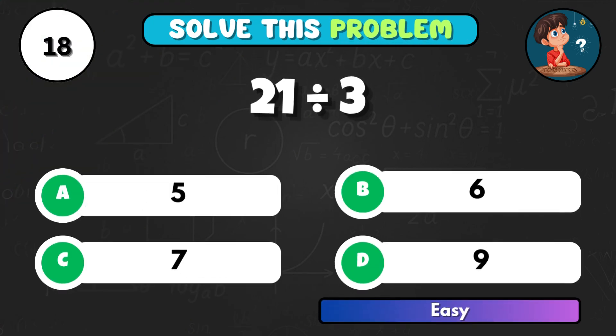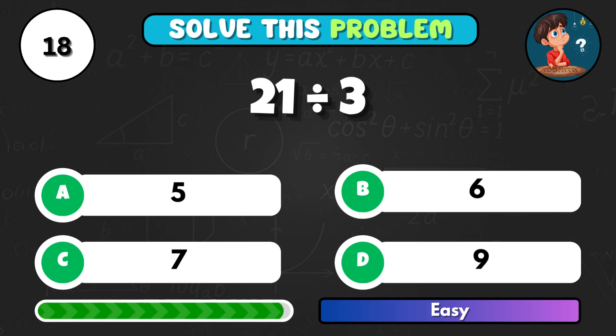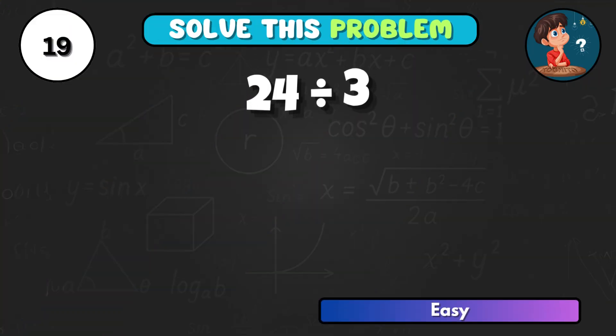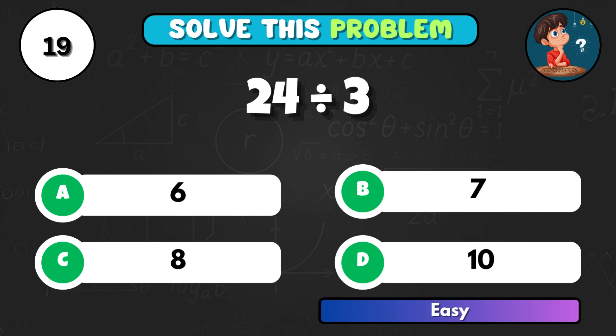Now try 21 divided by 3, what do you get? That's C, giving 7. 24 divided by 3, what's the total? Option C equals 8.